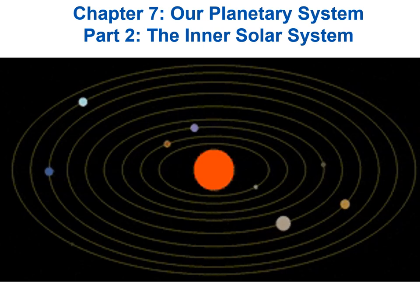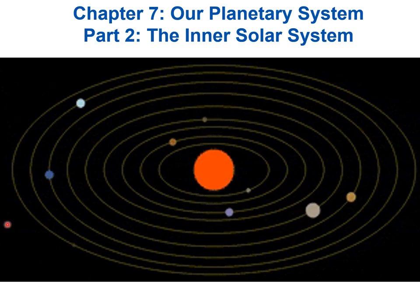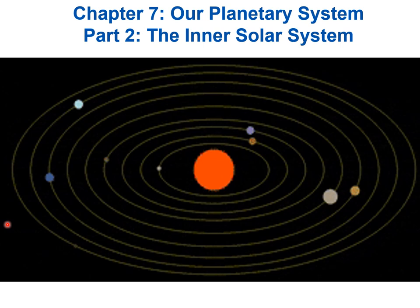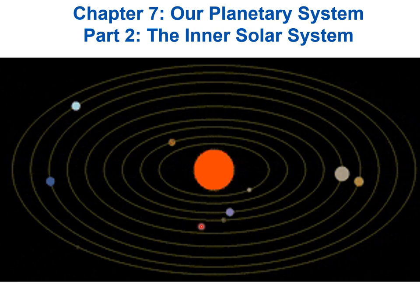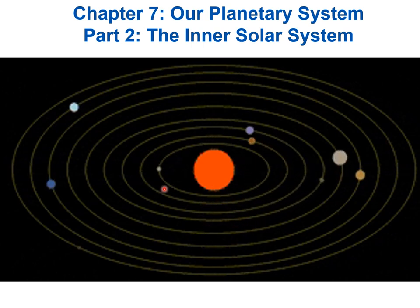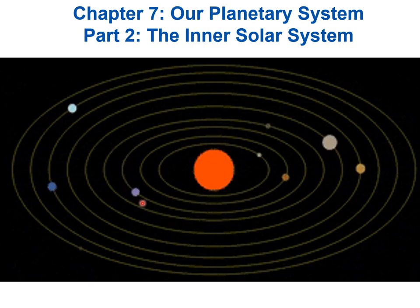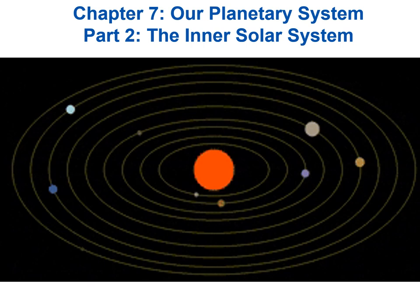Welcome to the wonderful world of astronomy. This is Chapter 7 on our Planetary System Part 2. We're going to look at the inner solar system. And here you see the layout of the planets. We can see the inner solar system refers to the sun and these first four planets: Mercury zooming around very fast, then Venus, then this blue one Earth, and then Mars. They are the inner solar system.